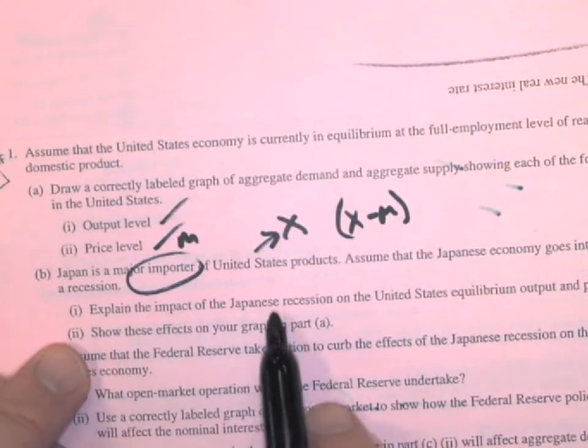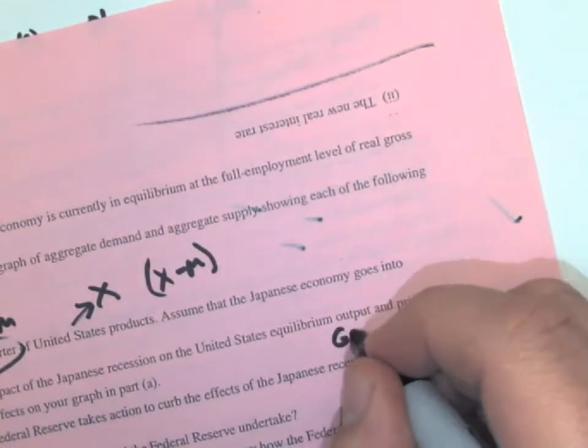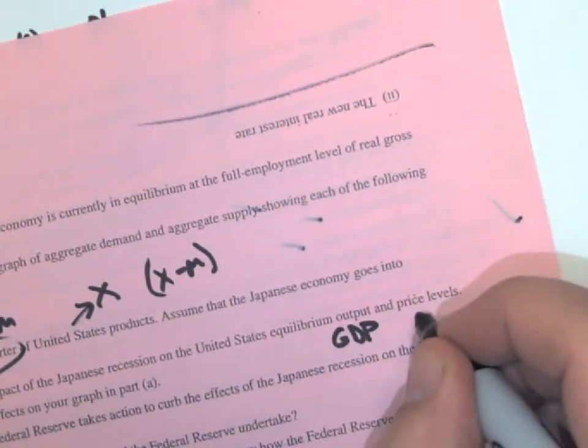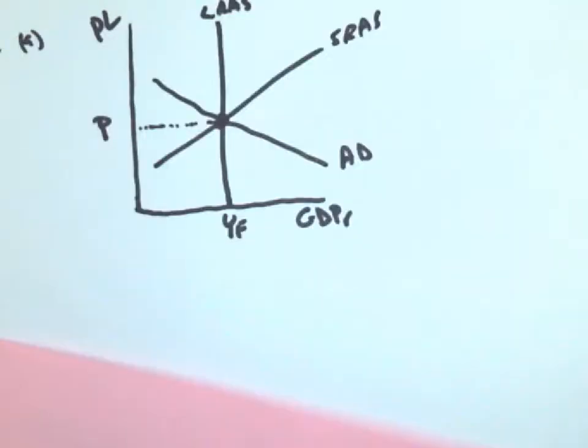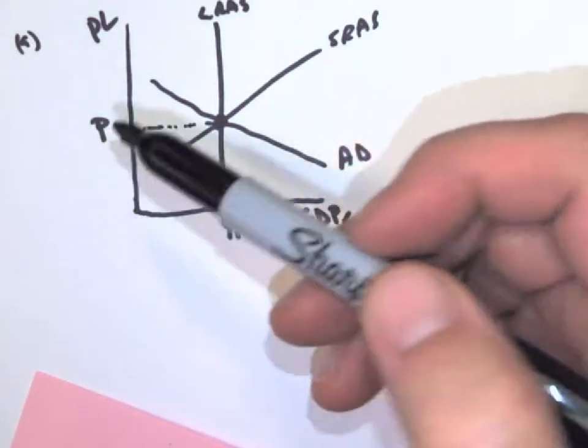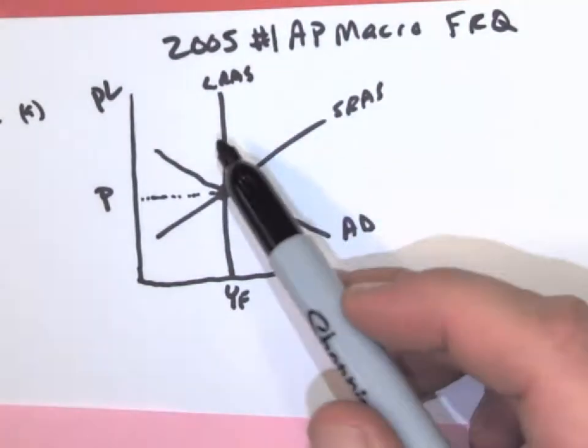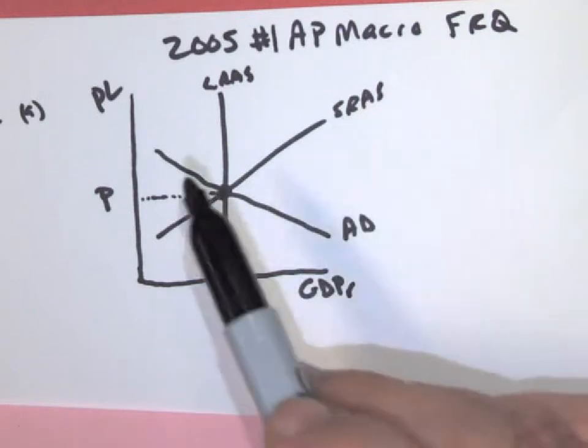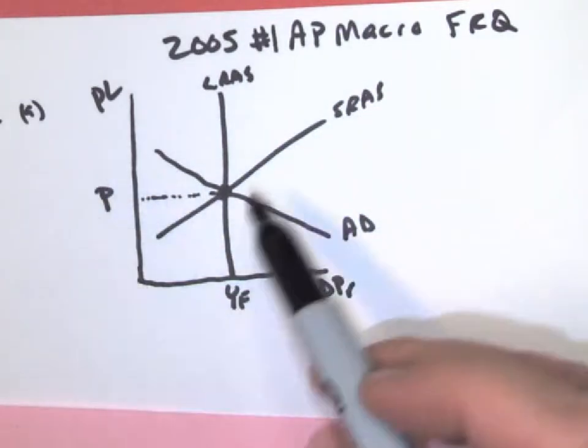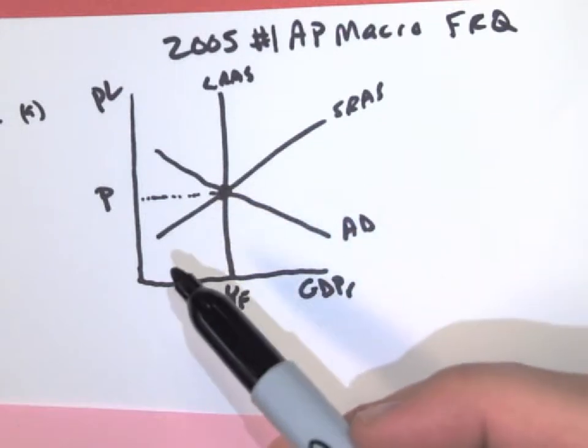So it says, explain the impact of the Japanese recession on the United States equilibrium output and price levels. Output, remember is GDP, price level is going to be inflation or the level of prices right here on the aggregate supply and demand. So you get a point for your correctly labeled graph, you get a point showing equilibrium at full employment, and you get a point for correctly labeled price and output levels. So just drawing this graph correctly is worth three points according to College Board.